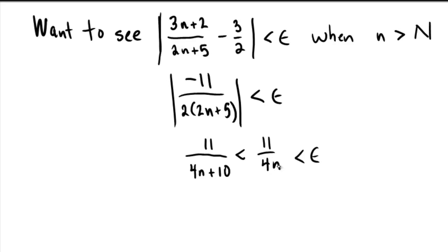if we could make 11 over 4n be less than epsilon, if we could make this happen, that would force this to happen, which is what we really wanted, simply because the denominator is even larger still.